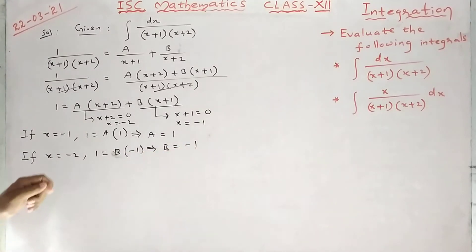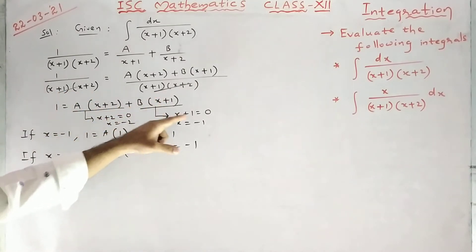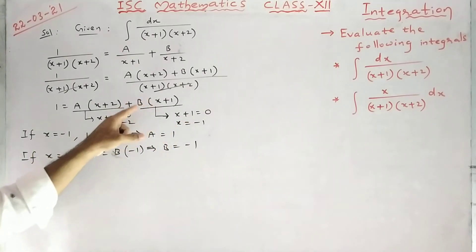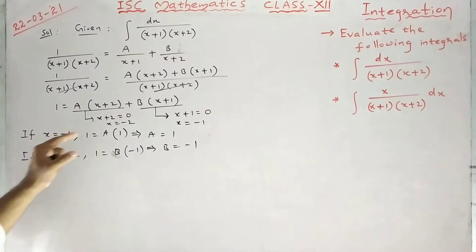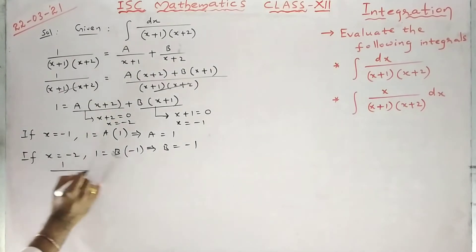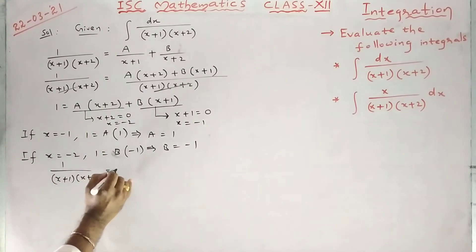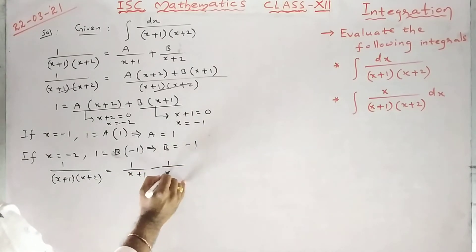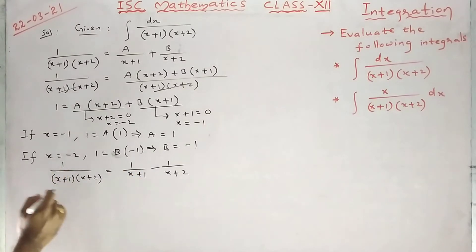To get the value of A, make the coefficient of B equal to 0. Then we get the value of A. So now, 1/[(x+1)(x+2)] = 1/(x+1) − 1/(x+2). If you take LCM and simplify, we will get the same fraction. These two are called partial fractions.